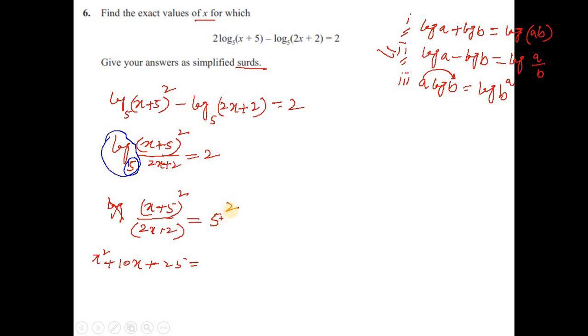If you cross multiply and open the formula, you have x² + 10x + 25 on the left-hand side, and on the right-hand side, 5² is 25 multiplied by these two terms, which will give you 50x + 50. You rearrange and you can have a quadratic equation: x² - 40x - 25 = 0.